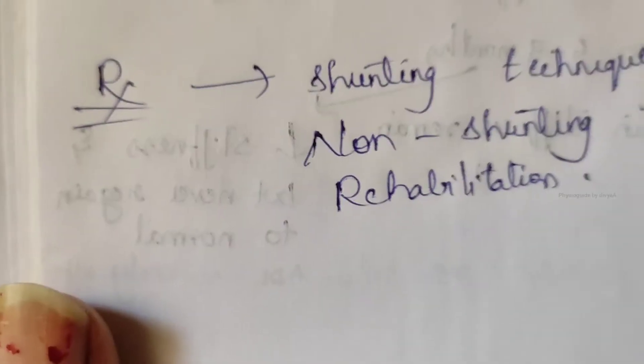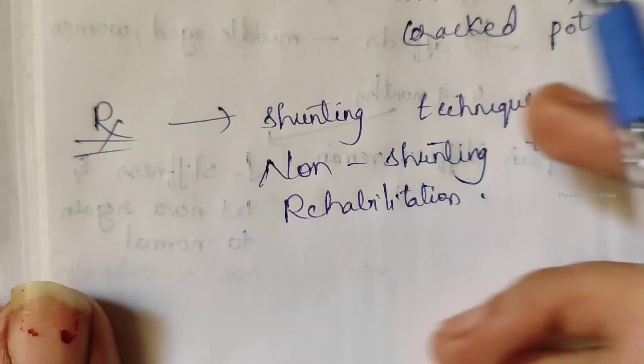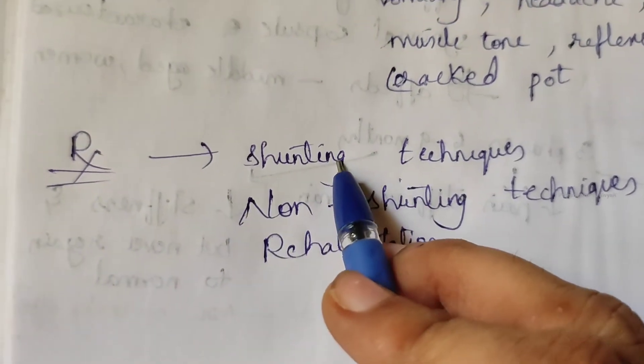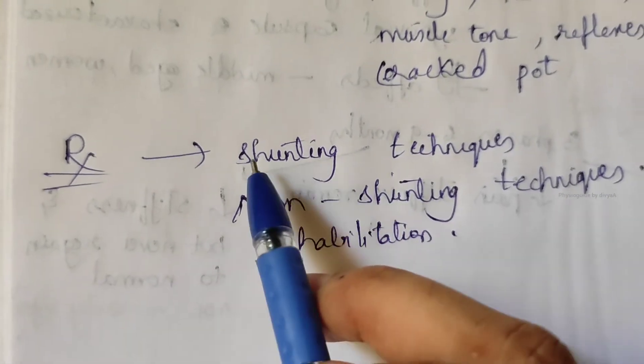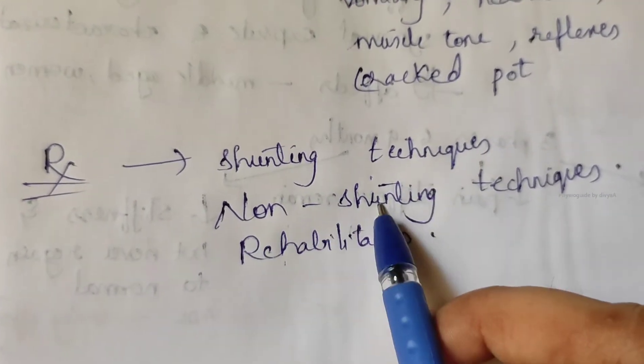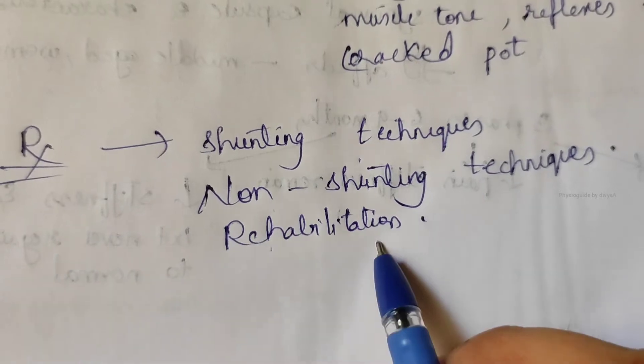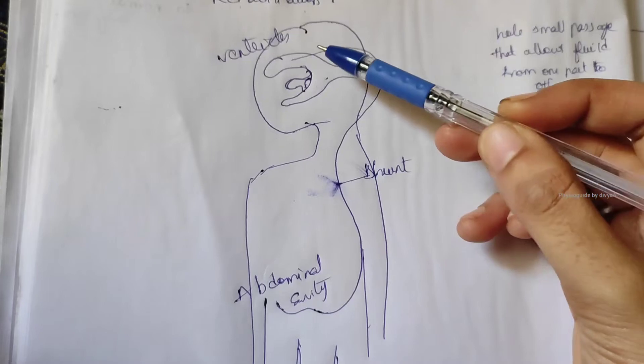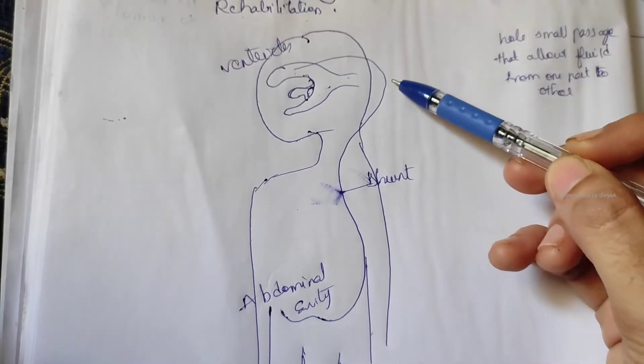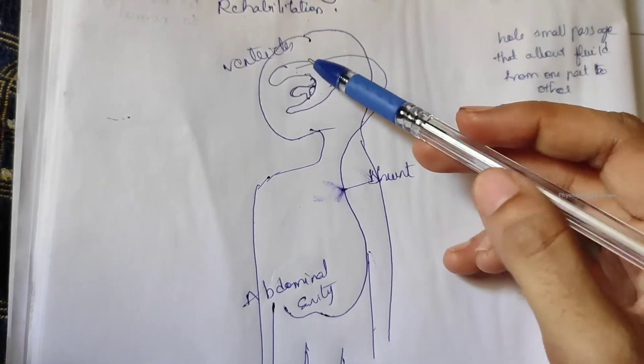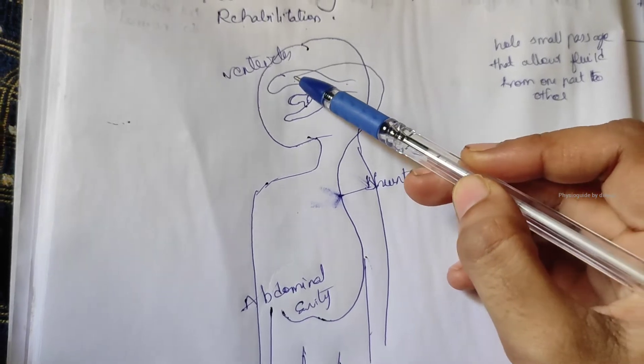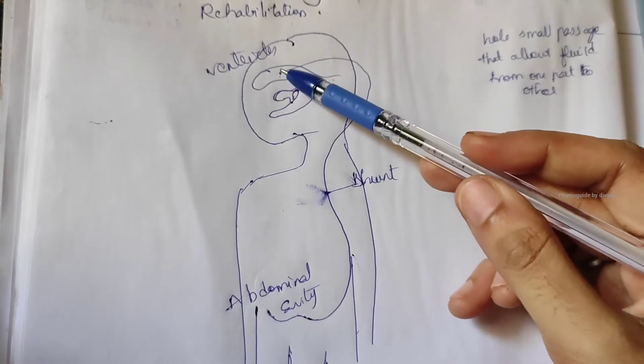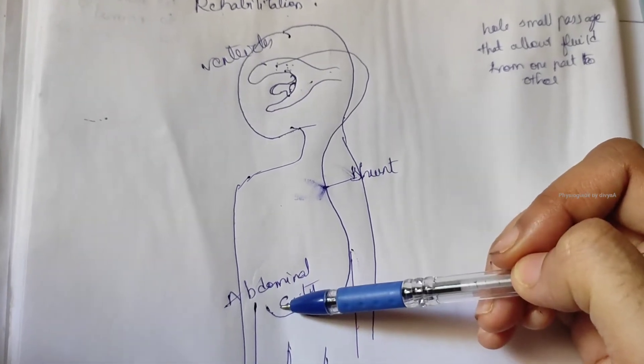Treatment is divided into shunting technique, non-shunting technique, and rehabilitation. For example, suppose this is a person, these are the ventricles. See, from here the shunting is done. This is a shunt, meaning a small hole that allows fluid from one part of the body to another. From the ventricles, it passes to the abdomen.